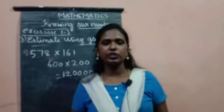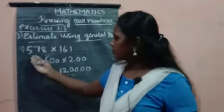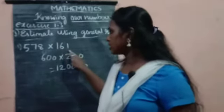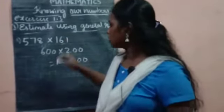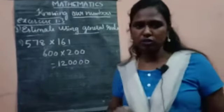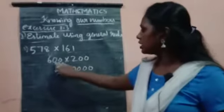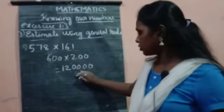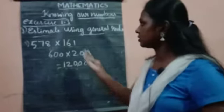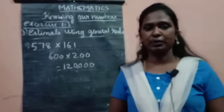So students, we have seen the addition and subtraction using general rule. Let us see the multiplication using general rule. Here, you have 578. Above 50, take 600. Again, 161 is there, these two numbers are above 50, so take 200. Now, how to multiply? It is very easy. You don't need to write all the process in the working column. Just multiply, 6 times 2 is 12, and add the zeros. Here, 2 zeros and here 2 zeros. Write the 4 zeros here. The answer is 1,20,000. It is very easy. Maximum sums as I have done in exercise 1.3. The left out sums are to be tried by you. If you have any doubt, you can ask me. Thank you so much.